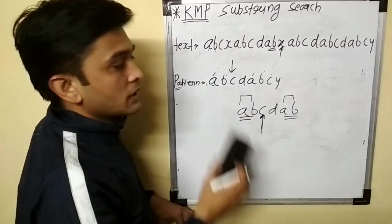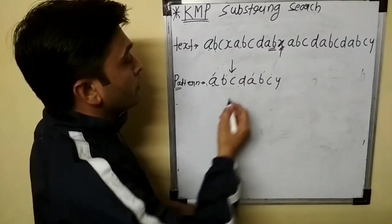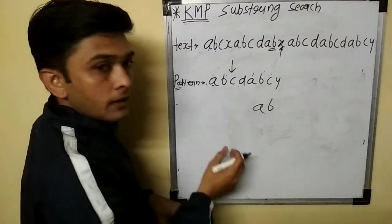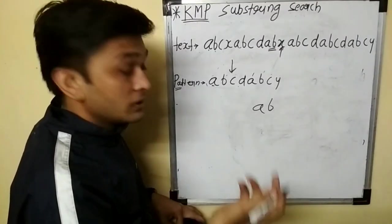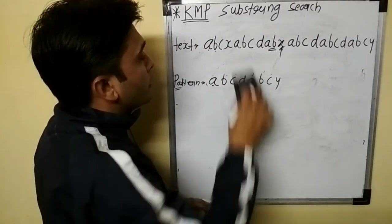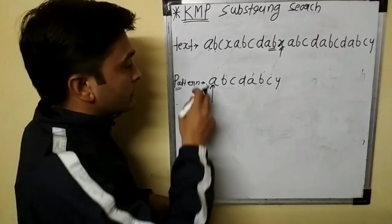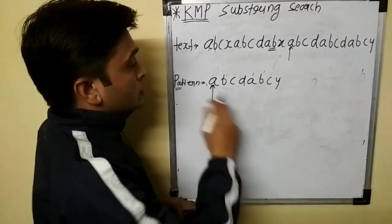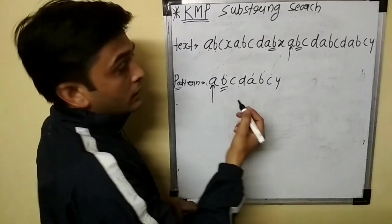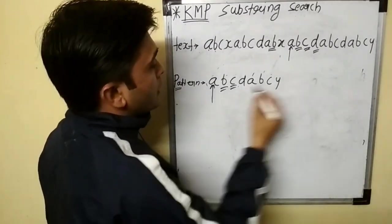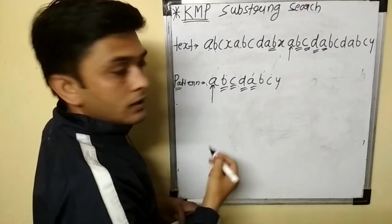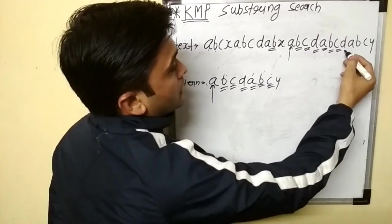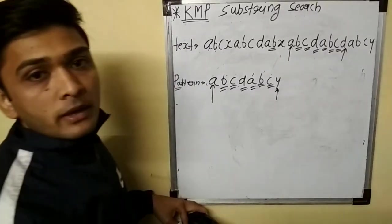So the next character to compare with the unmatched character in the text is C. C is compared with X — no match again. We find the substring before the mismatched character in the pattern: it is AB. There is no suffix which is also a prefix in AB. So we compare the starting character A with X — no match. Then A is compared with the next character A — match. B with B, C with C, D with T, A with A, B with B, C with C — all match. Then D is compared with Y — no match.